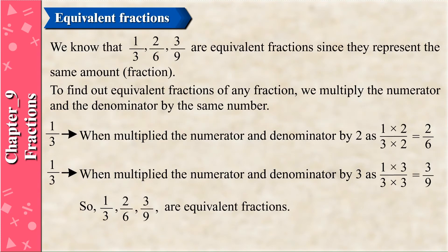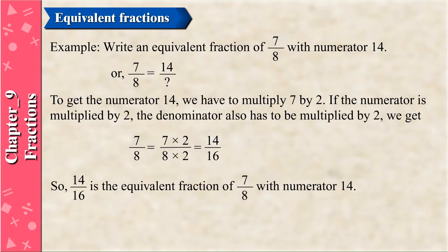Equivalent Fractions: We know that 1/3, 2/6, and 3/9 are equivalent fractions since they represent the same amount. To find equivalent fractions of any fraction, multiply the numerator and denominator by the same number. 1/3 multiplied by 2 gives 2/6. 1/3 multiplied by 3 gives 3/9. So 1/3, 2/6, and 3/9 are equivalent fractions.